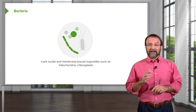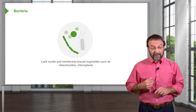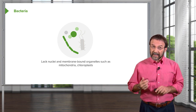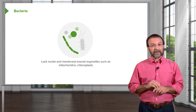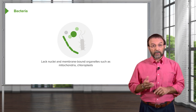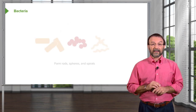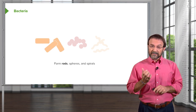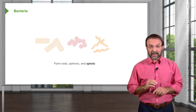Bacteria have a number of properties that distinguish them from the cells that are in you and I. For example, they don't have nuclei as do our cells, and they don't have membrane-bound organelles like mitochondria or chloroplasts, which are found in plants. There are a lot of different shapes of bacteria — they include rods, spheres, and spirals, and a few others.